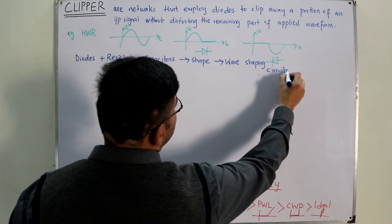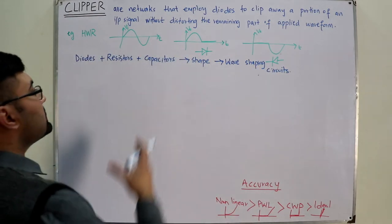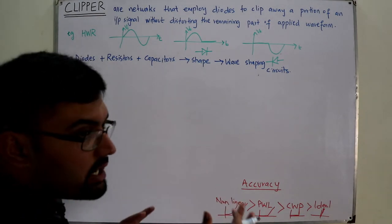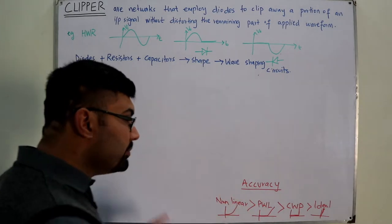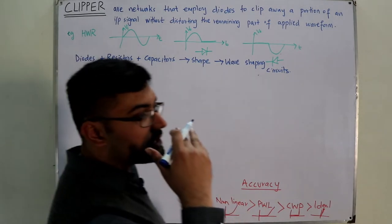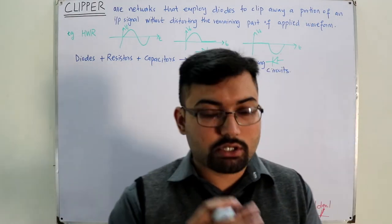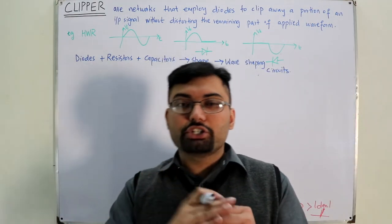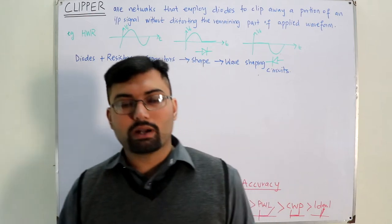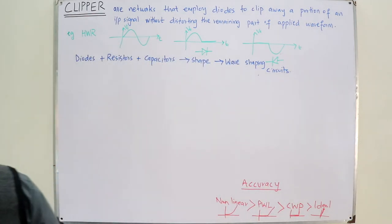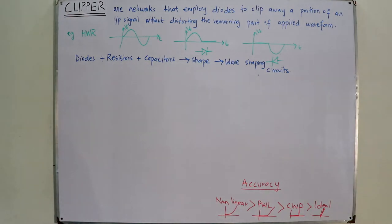The clipper is a simple circuit that removes a portion and lets the other portion pass. Similarly, we will also have the clamper circuit — again a diode in combination with a resistor and capacitor — where we shift the signal to another DC level. We will cover that later. For now, I believe the introduction to clippers is clear.